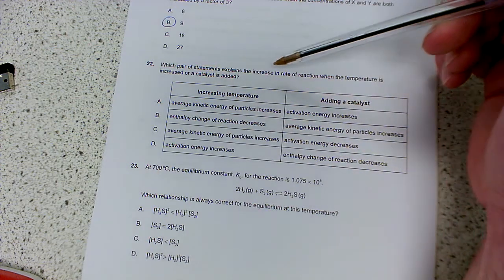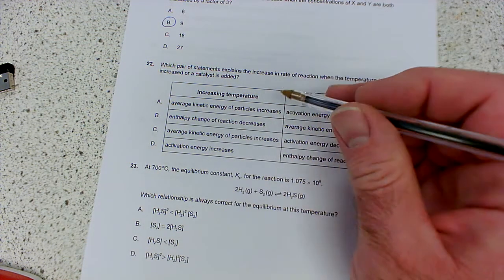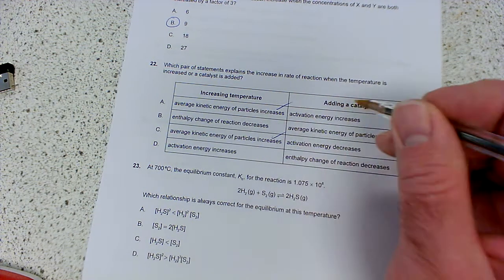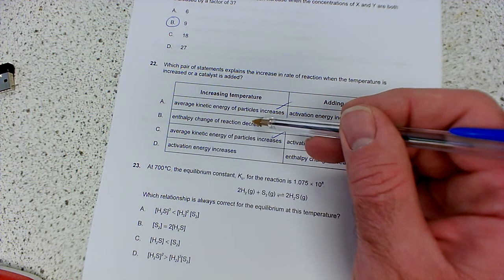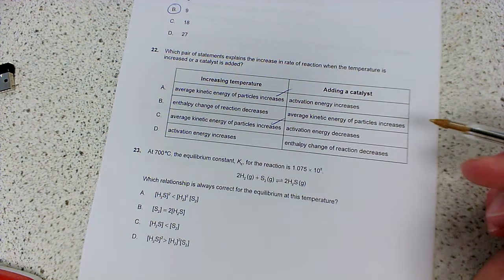Which pair of statements explains the increase in rate of reaction when the temperature is increased or a catalyst is added? Well, increasing temperature, that's going to increase the average kinetic energy of the particles. It won't affect the entropy change of the reaction. That will remain the same. The activation energy would also remain the same as well, just by increasing temperature.